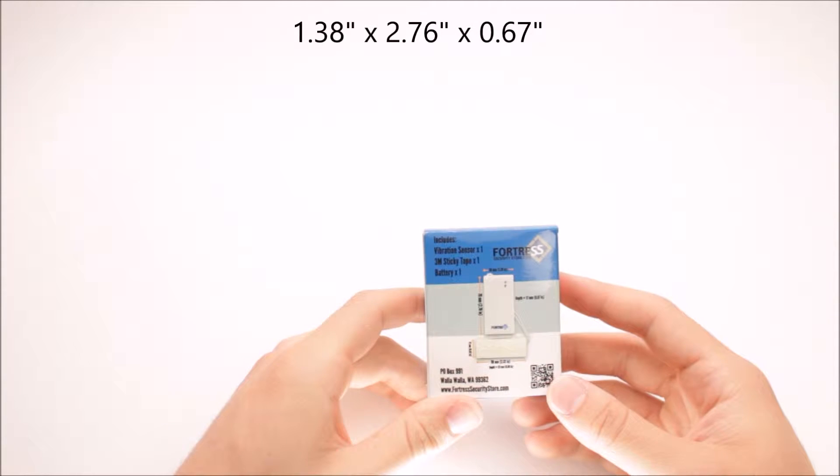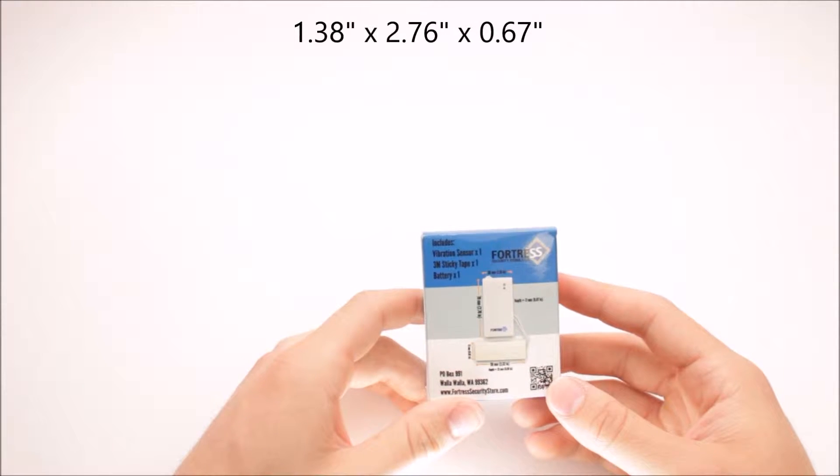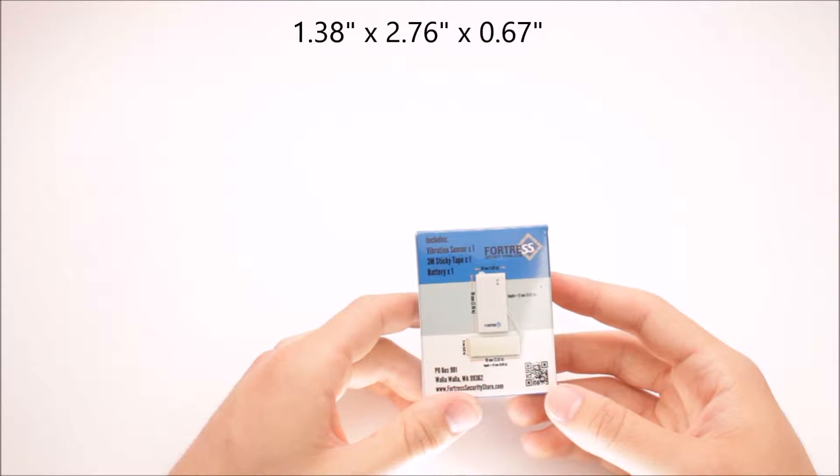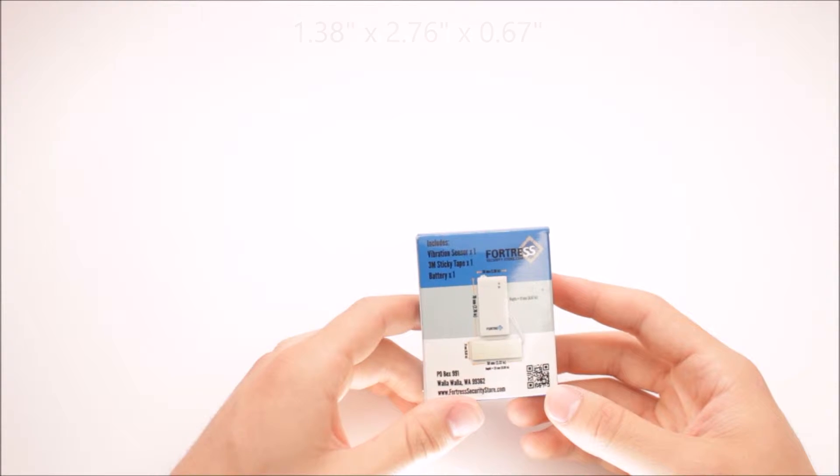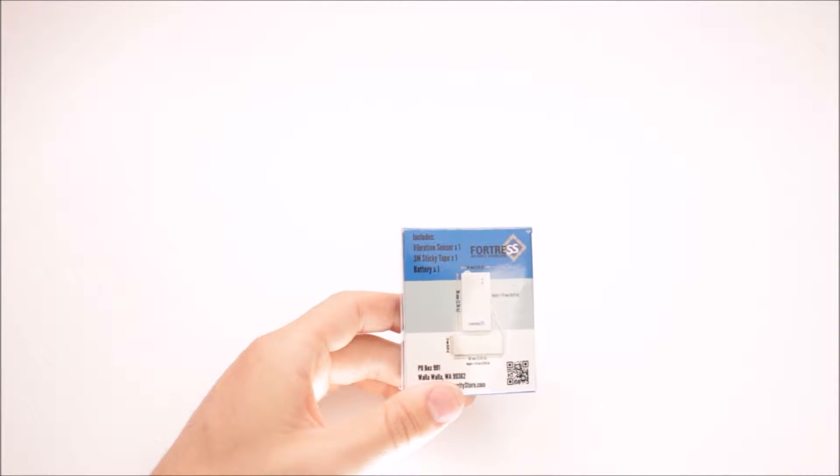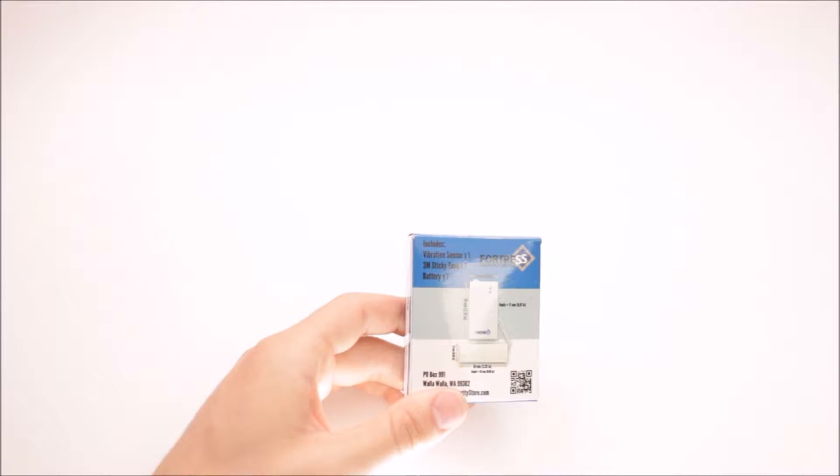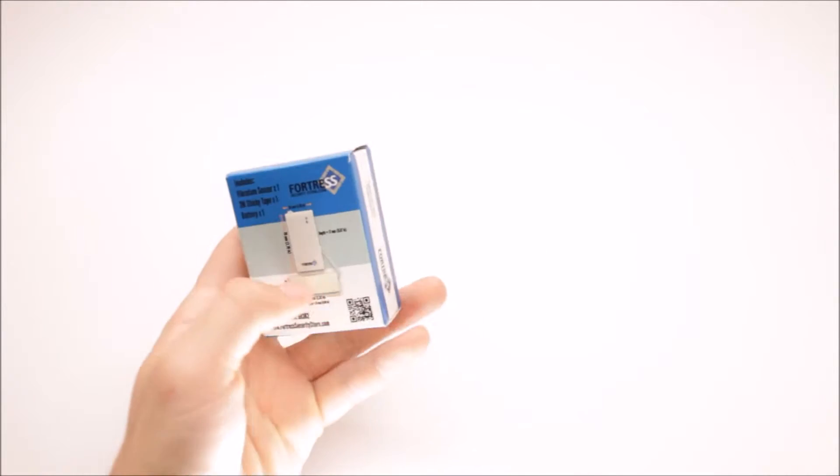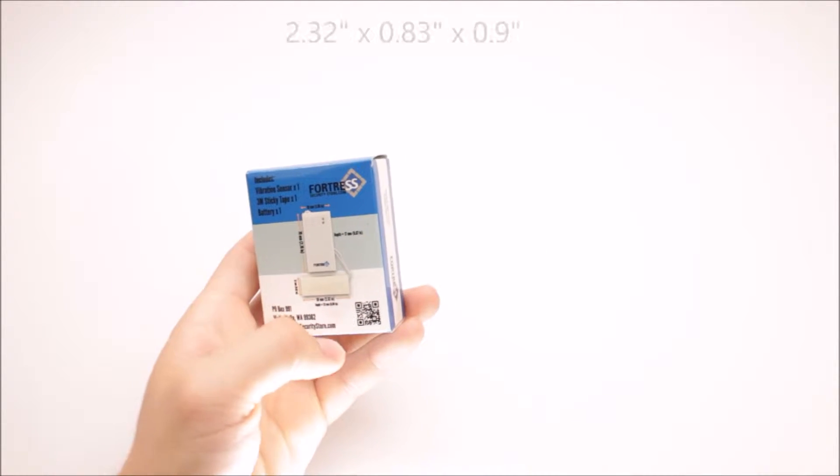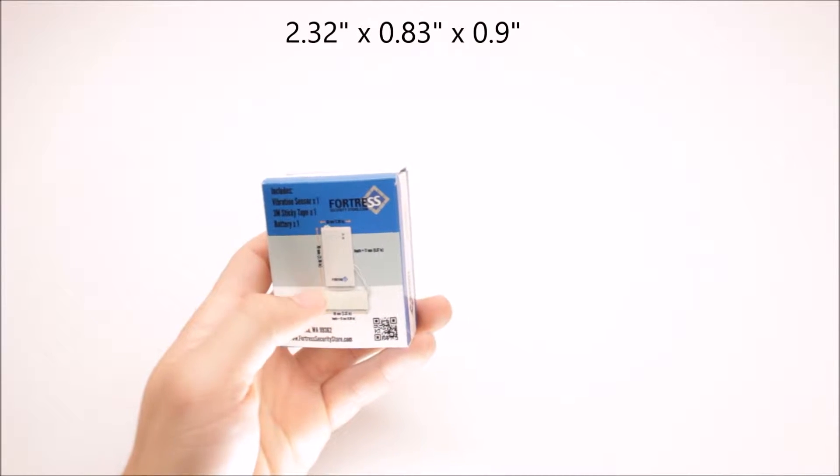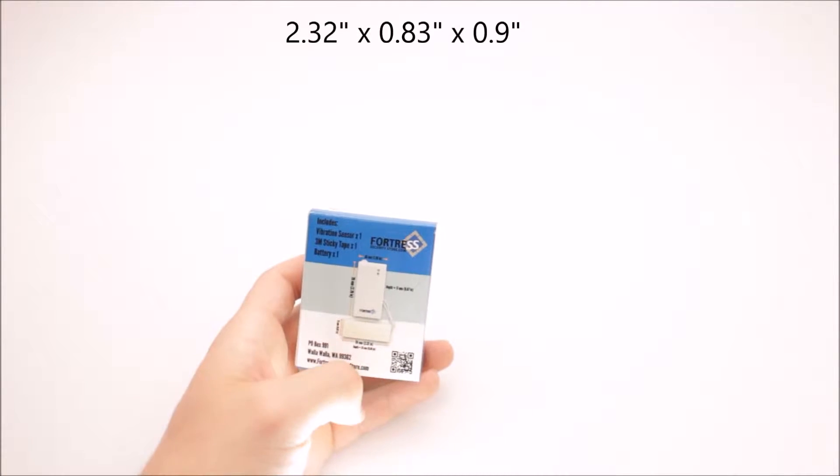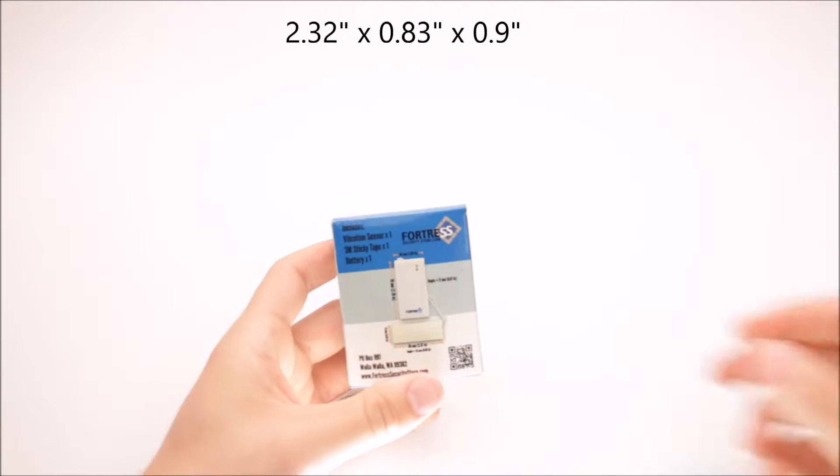Width of the transmitter side, shown in the picture on the top here, is 1.38 inches across, height is 2.76 inches, and the depth is 0.67 inches. The sensor part has a length of 0.9 inches and a height of 0.83 inches.